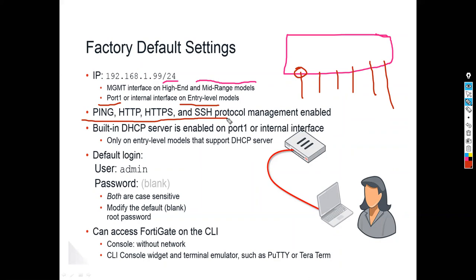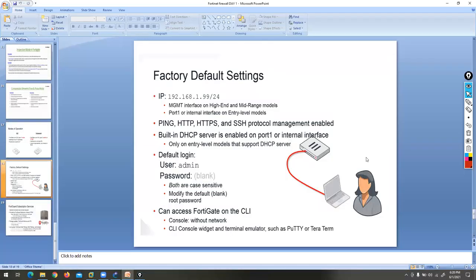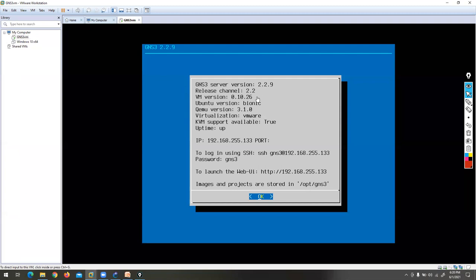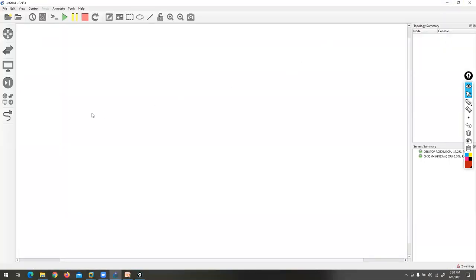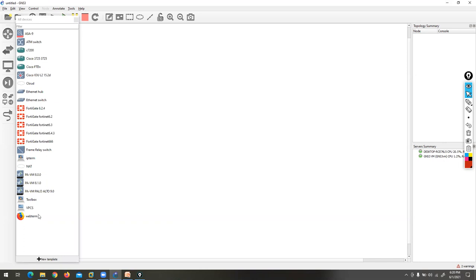To use port one as a management port, you need to enable the relevant services — remember, no services are enabled on any interface by default. You need to enable ping, HTTP, HTTPS, and SSH protocols. The default login username for the FortiGate firewall is admin and the password is nothing. I'm using a GNS3 topology with a FortiGate firewall image, and my cloud represents my laptop.